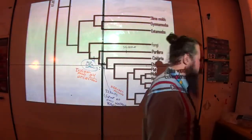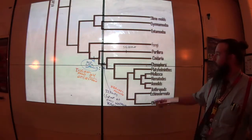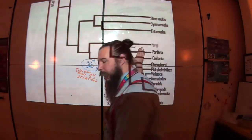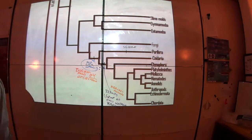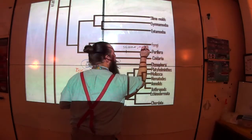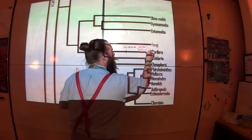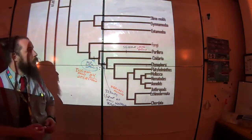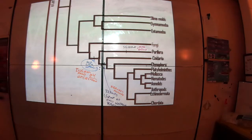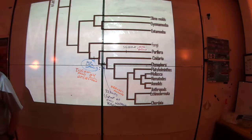Porifera — what sets them apart? They're the only sessile phylum. The entire phylum is sessile, meaning they don't move. They also have those cool ostia and oscula, common to all sponges. They have pores. Fungi — they're not animals; they're a whole separate kingdom, imaginatively called Kingdom Fungi.